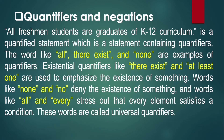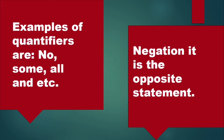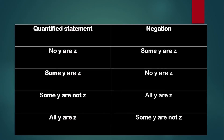What is negation? Negation is the opposite statement. For quantifiers like no, some, and all, the negation is the opposite statement. If we have the quantified statement 'No Y are Z,' the negation is 'Some Y are Z.' If we have 'Some Y are Z,' the negation is 'No Y are Z.' If we have 'Some Y are not Z,' the negation is 'All Y are Z.' And if we have 'All Y are Z,' the negation is 'Some Y are not Z.'